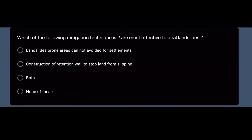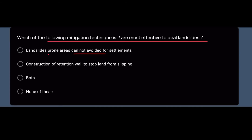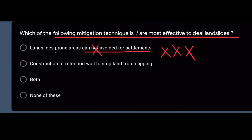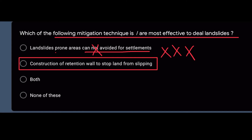Which of the following mitigation techniques are most effective to deal with landslides? We cannot promote settlement in landslide-prone areas — we must avoid it. To stop landslides, sleeping land area, further slope reinforcement, and retention walls are effective measures. The right answer is option number two.